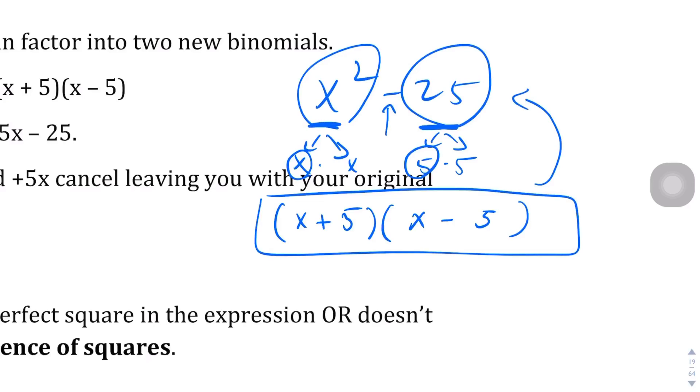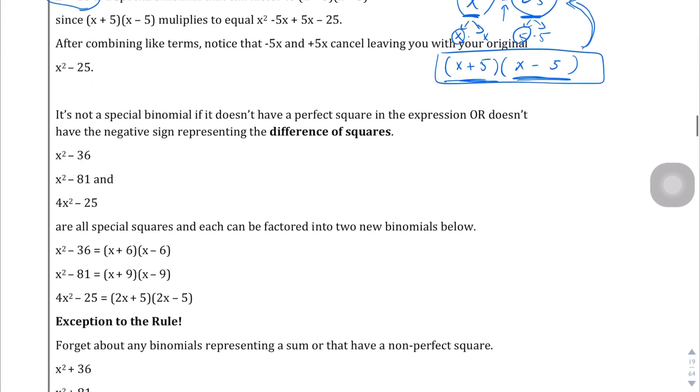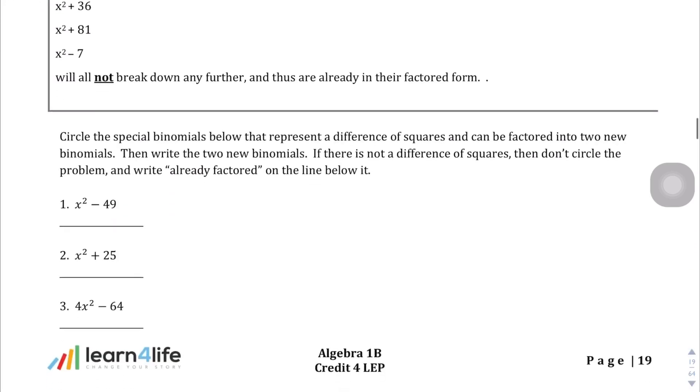If you don't believe me, you can multiply this out using the box method and you should come out to the same original binomial form here.